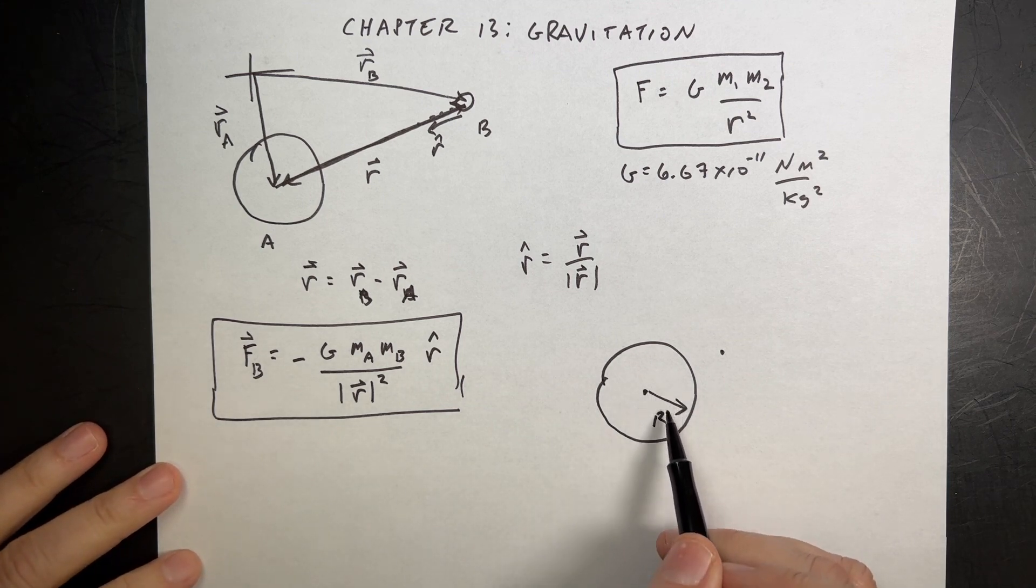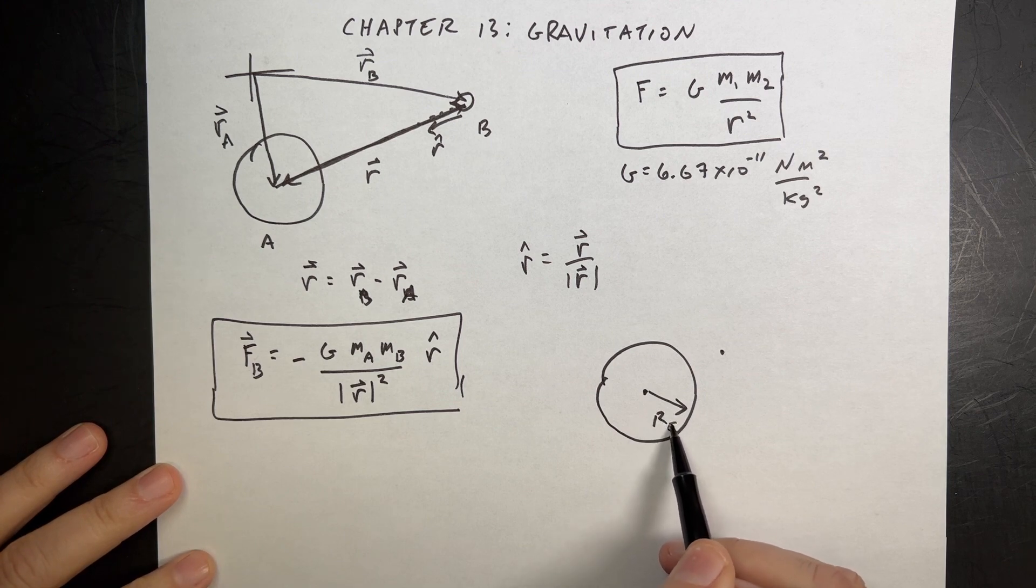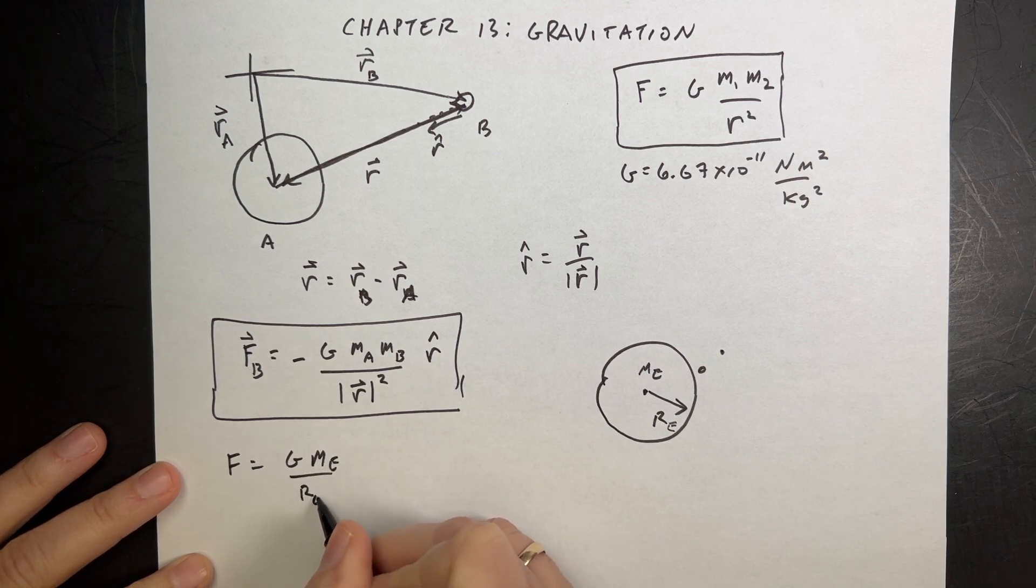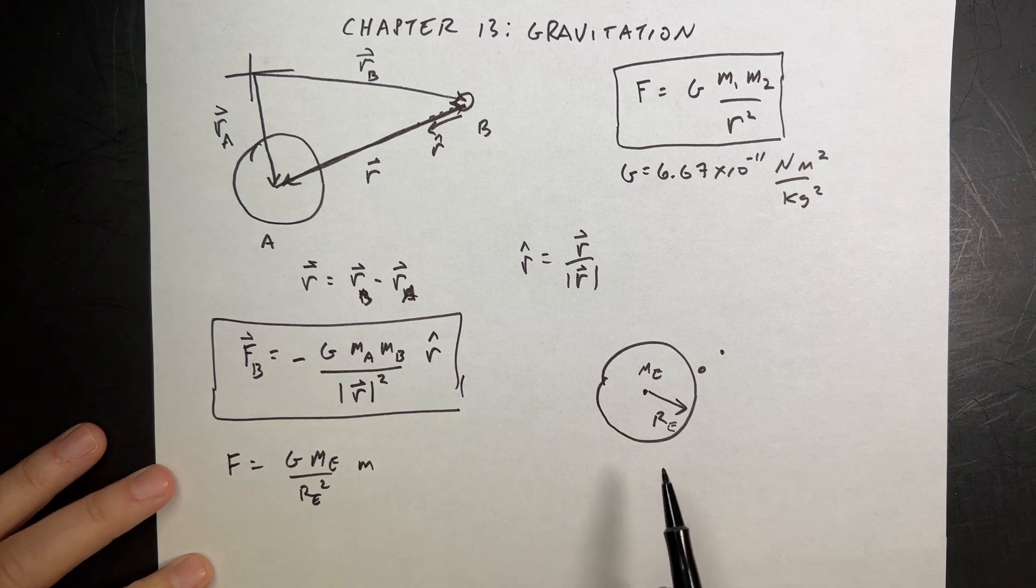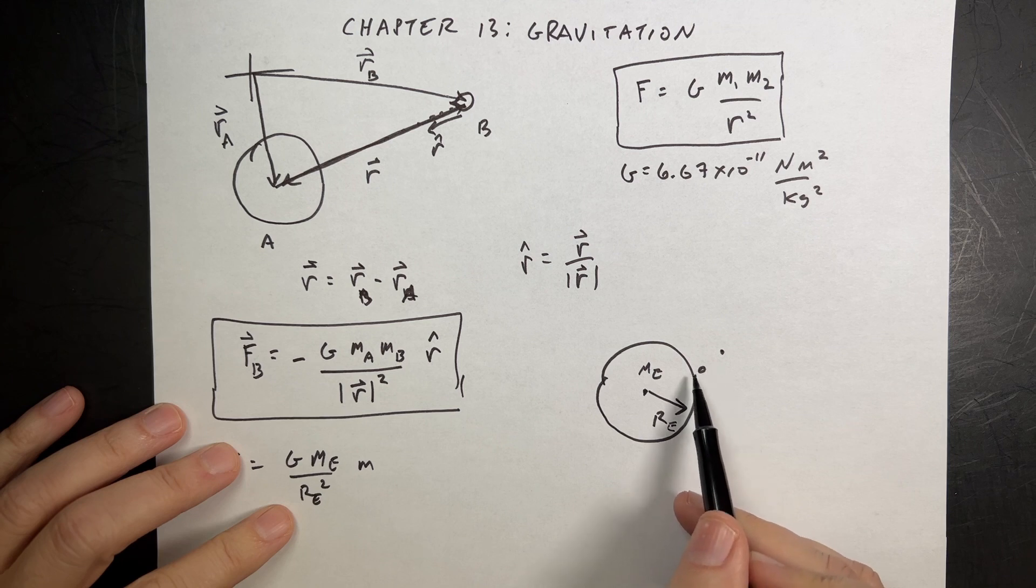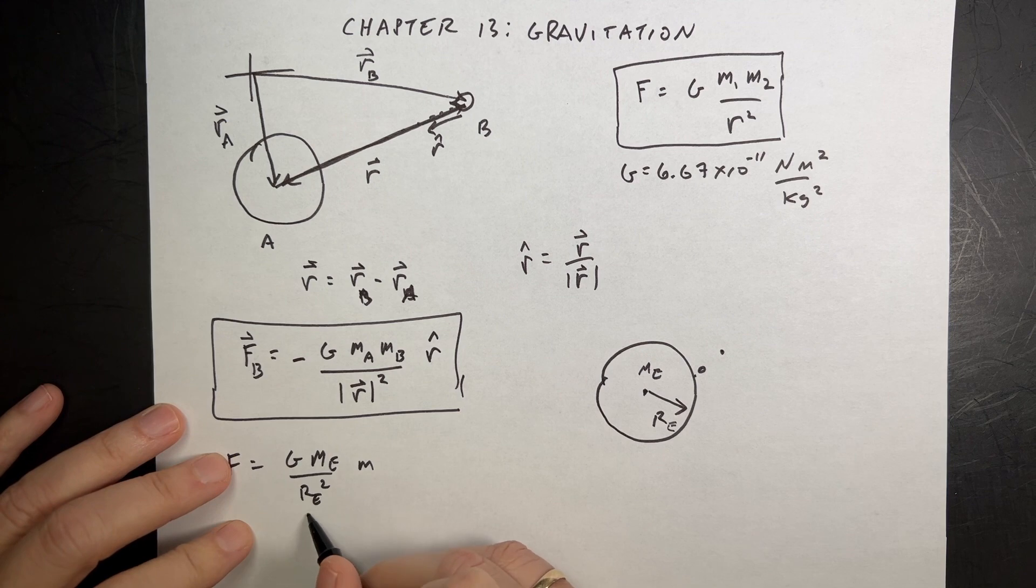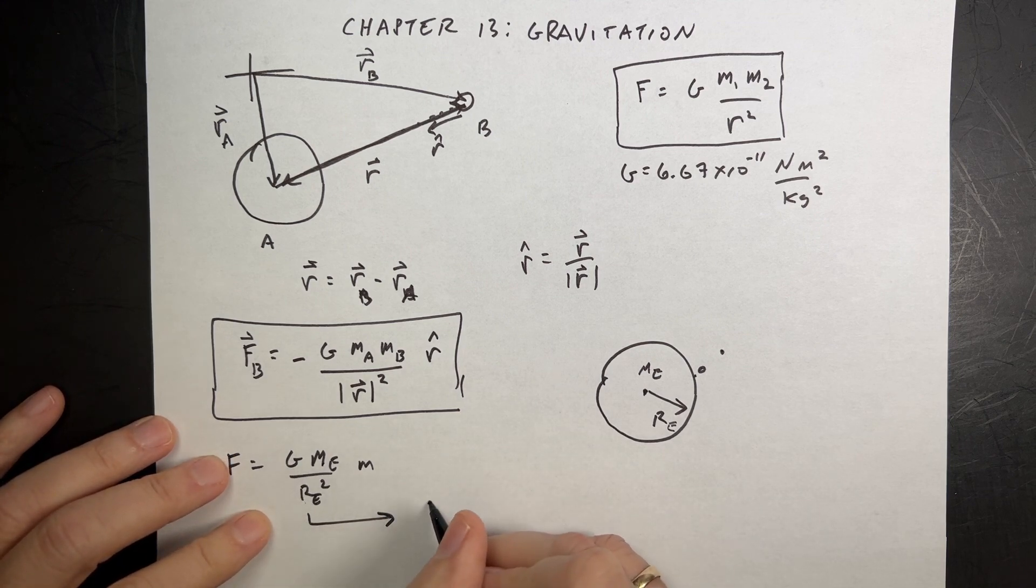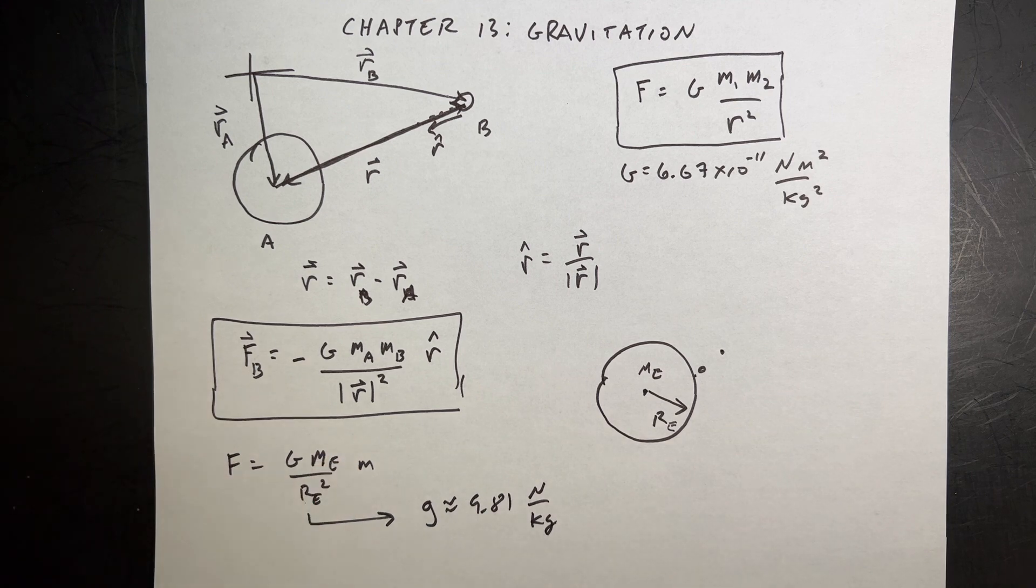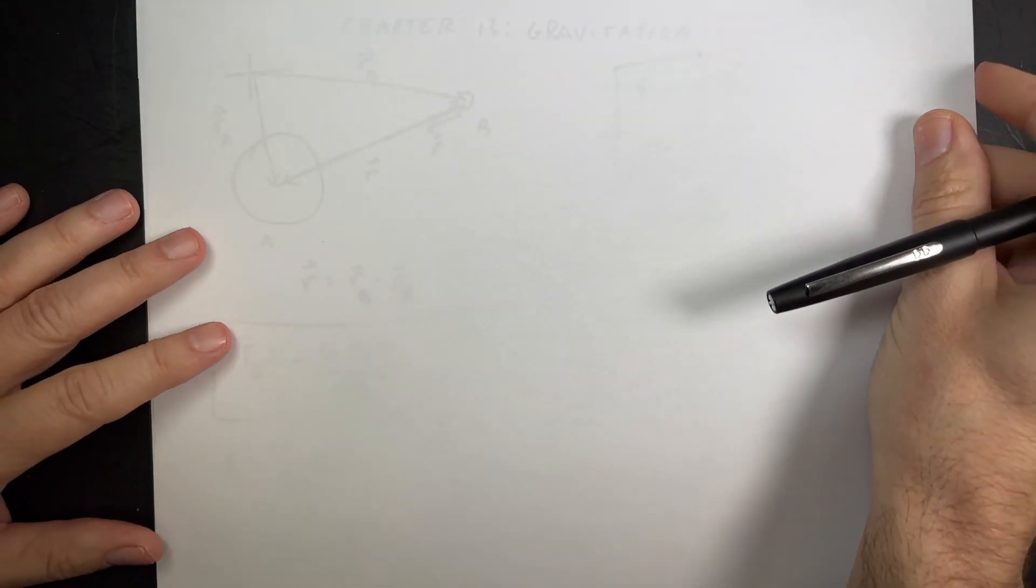One last thing that's kind of fun. If this is the Earth, the radius of the Earth and the mass of the Earth, then an object on the surface would have a gravitational force F equals G mass of the Earth over the radius of the Earth squared times the mass of the object. It turns out that this value right here, if you put in G, mass of the Earth over R squared, we call that little g, and it's approximately equal to 9.81 newtons per kilogram.